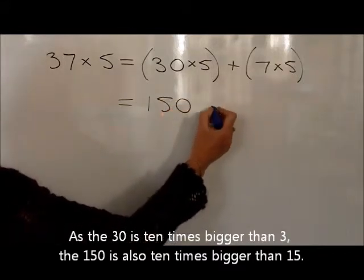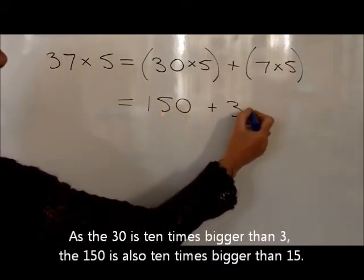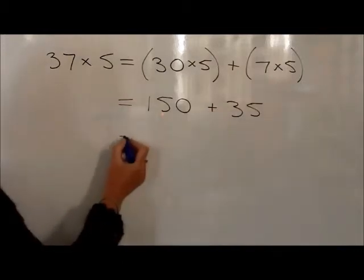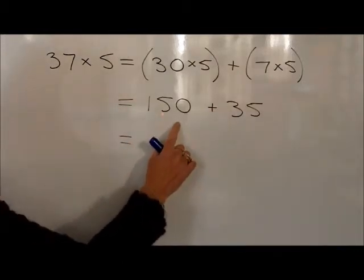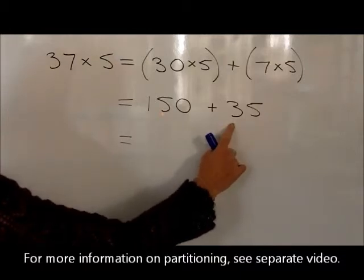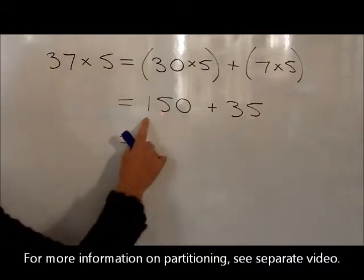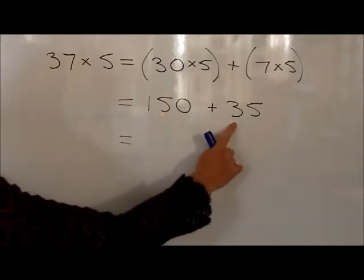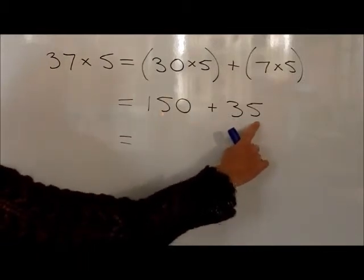then add on to 7 × 5, which they should know are 35. They would then add these two parts together, and they could partition the 35 into a 30 and a 5, so that 150 plus 30 is 180, plus